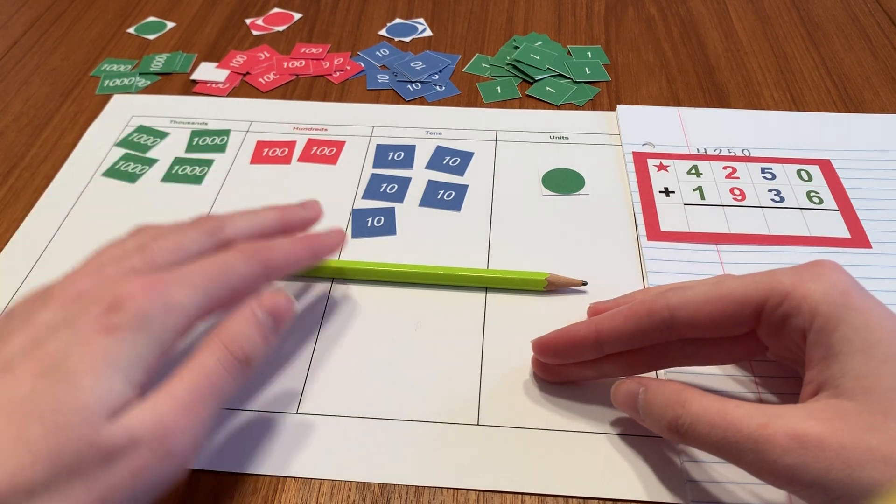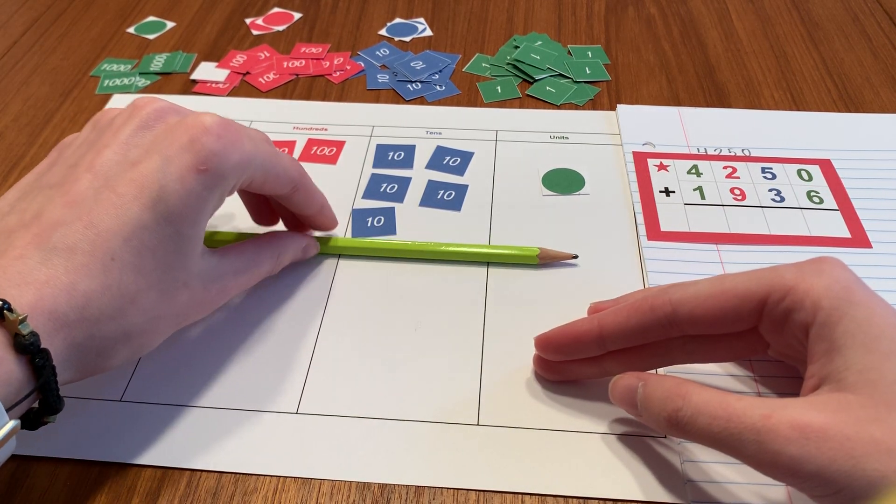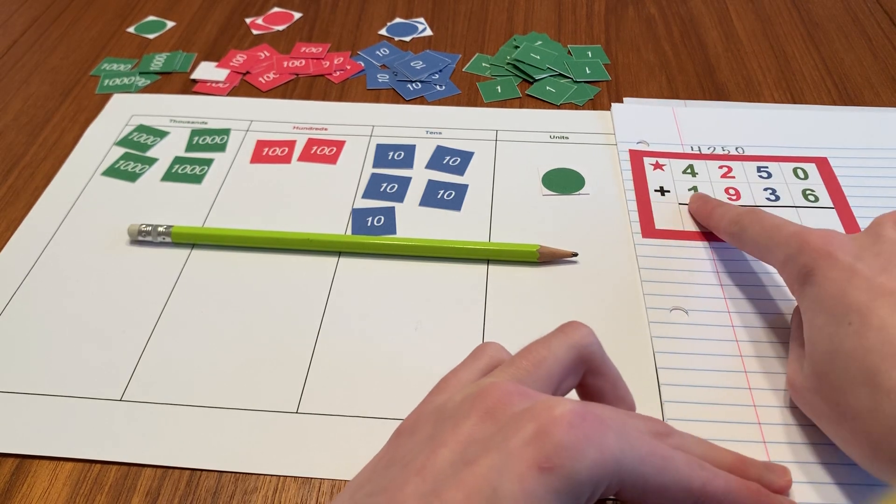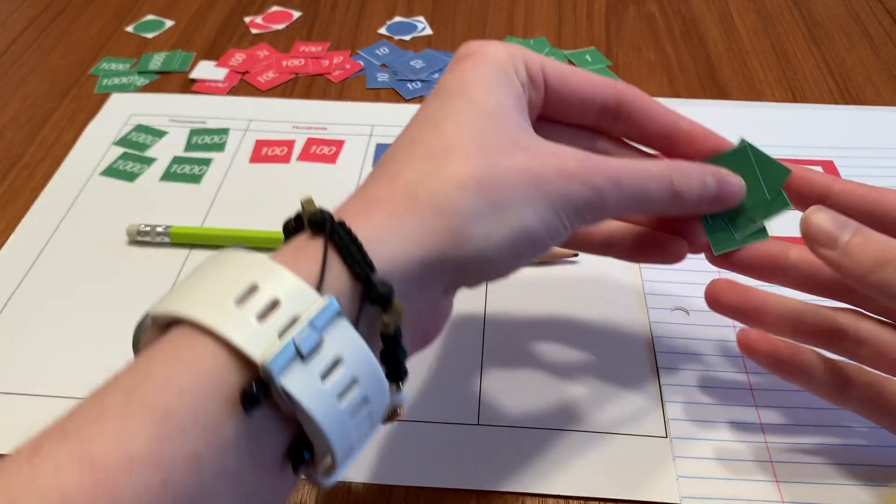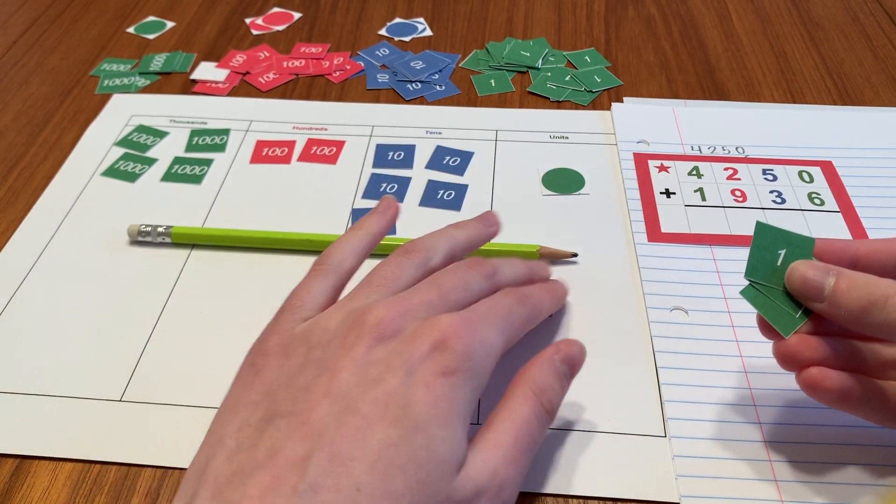Now I'm going to be using this pencil as my placeholder for the next number. And now I'm going to make the second number. So in my ones place, I have six. Six units.